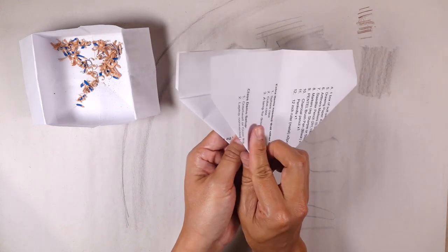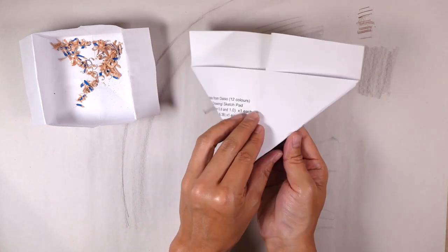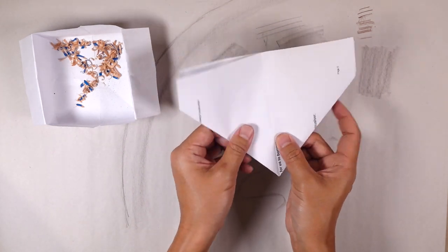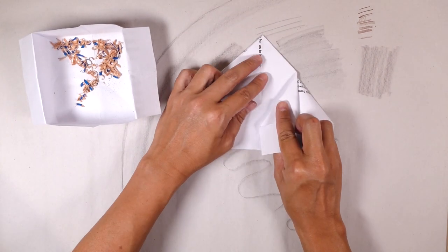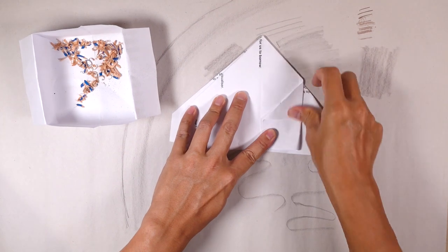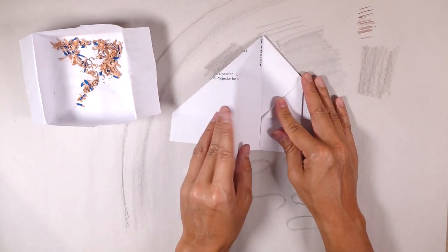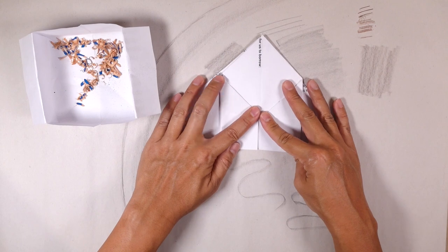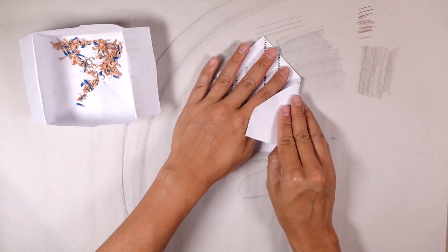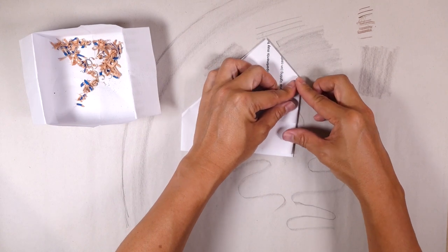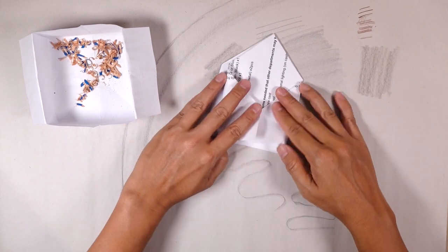So once you're done with this, open it up the other way or close it up this way. Depending on how you look at it, fold in another one time for all four sides. So that's one, two, flip it over, three and four.